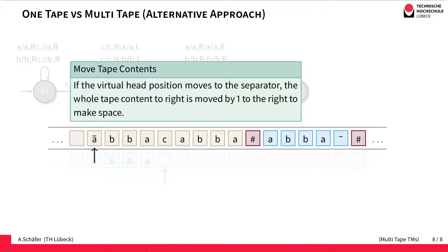We've seen two approaches to simulate a multi-tape Turing machine using only one tape. From now on we can freely use multi-tape Turing machines everywhere, because we know that in principle we could also construct a one-tape Turing machine doing the same thing. In many cases it's much easier to come up with a multi-tape Turing machine instead of a one-tape Turing machine.